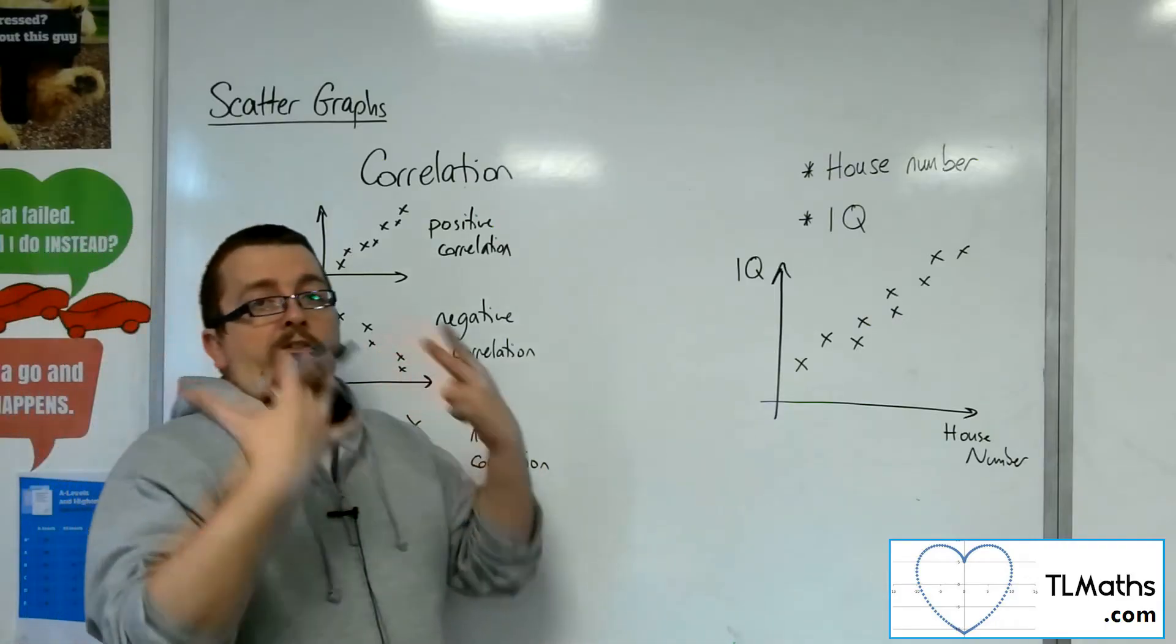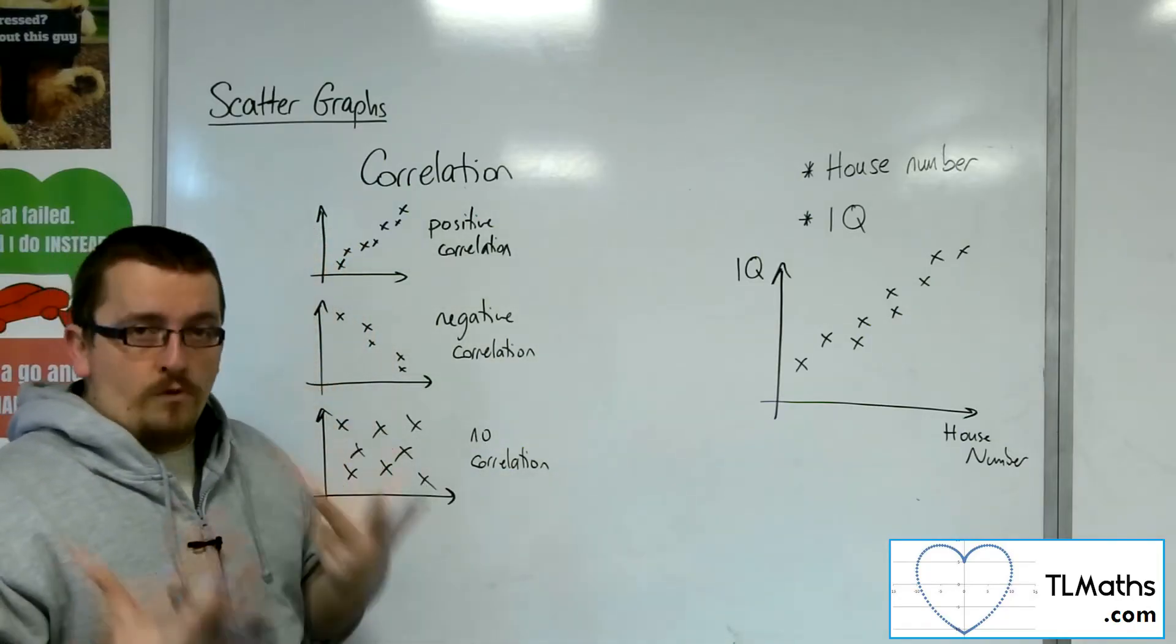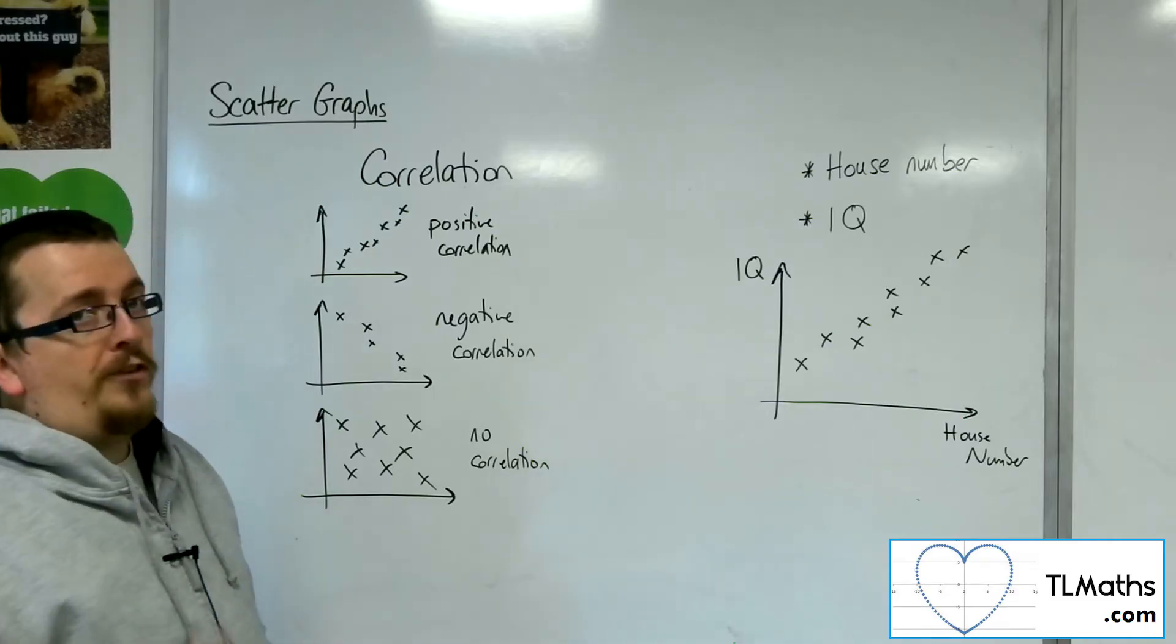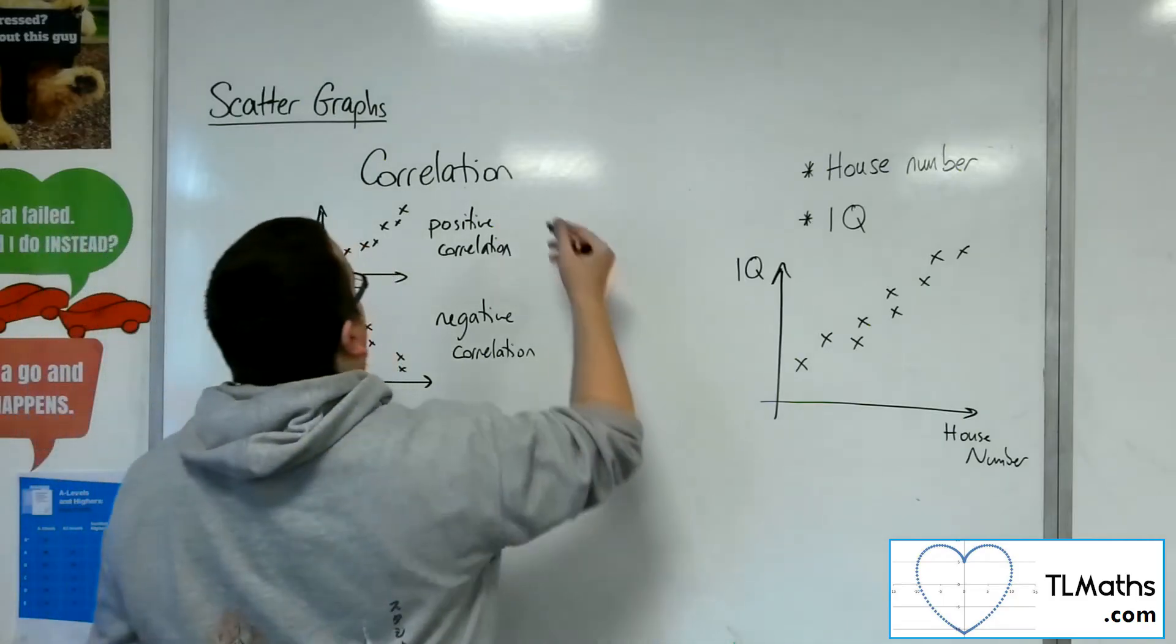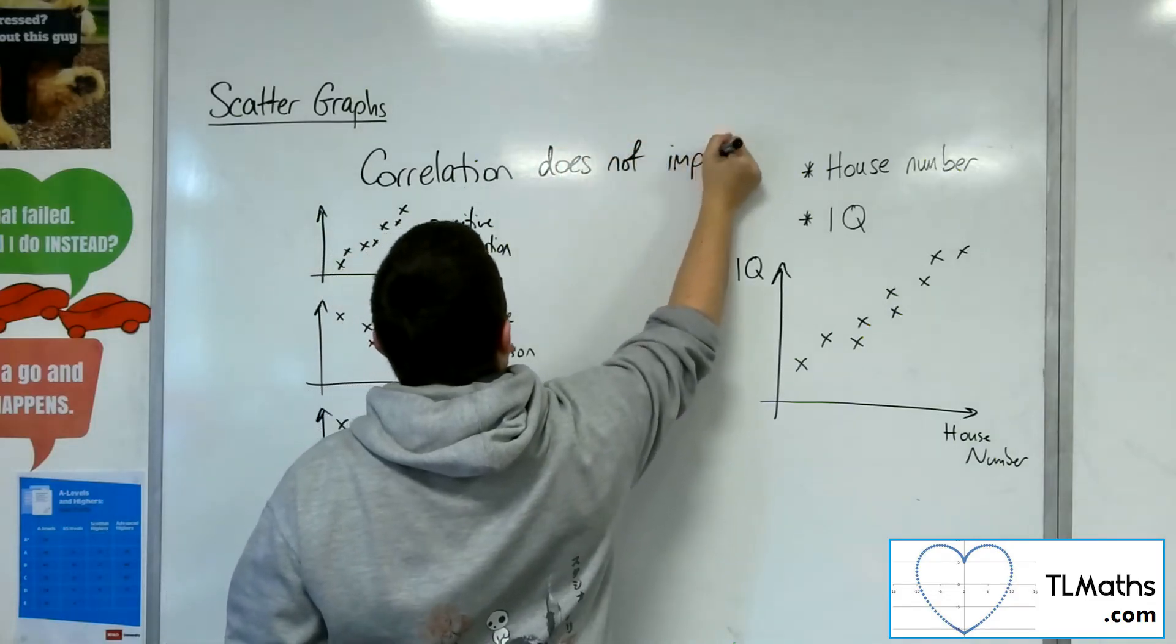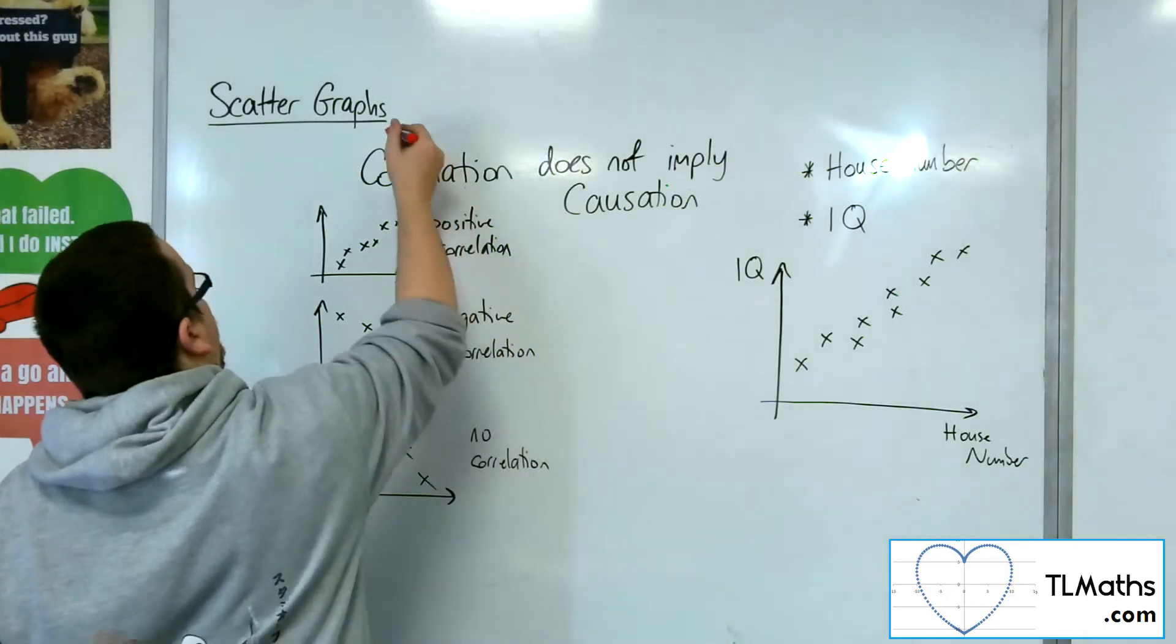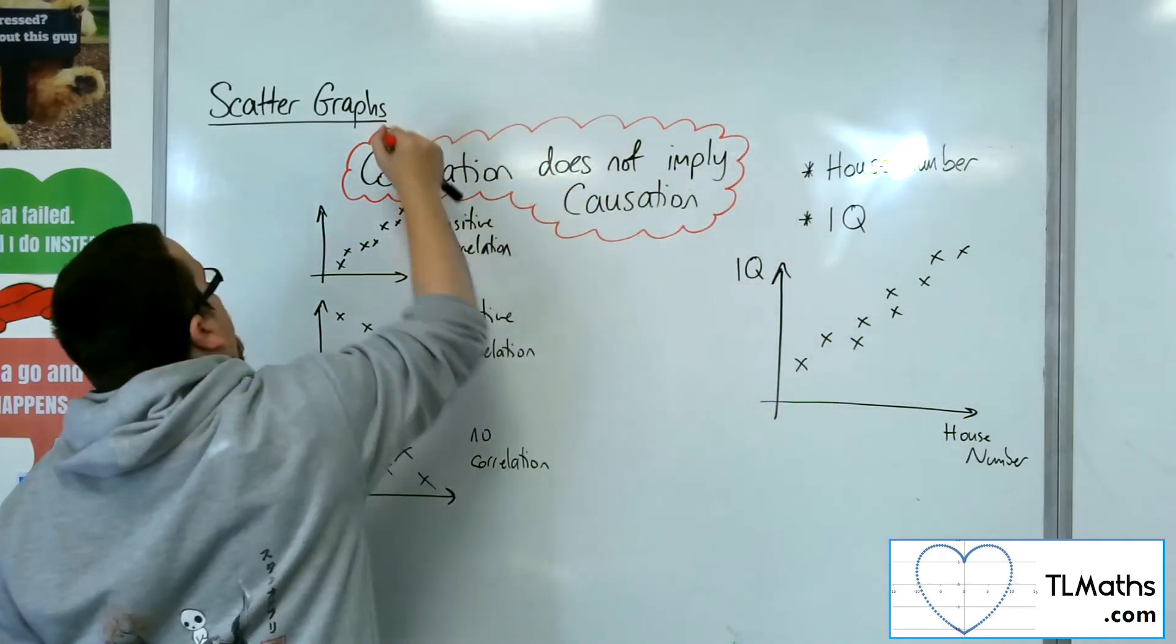And so this is where a very important statement comes in, one you should make sure you know and learn for future life whenever looking at scattergraphs and interpreting them: Just because you have correlation, that doesn't mean you have causation. Correlation does not imply causation. This is a very important statement. It means that just because you found some correlation,